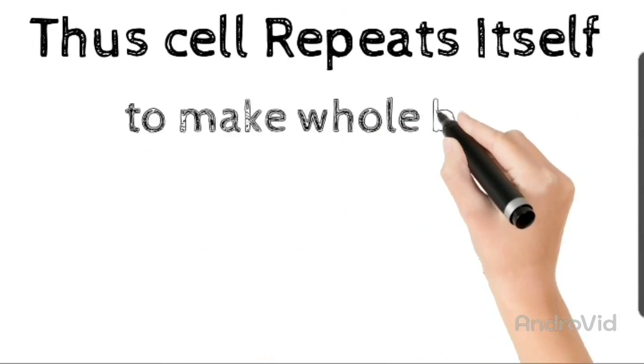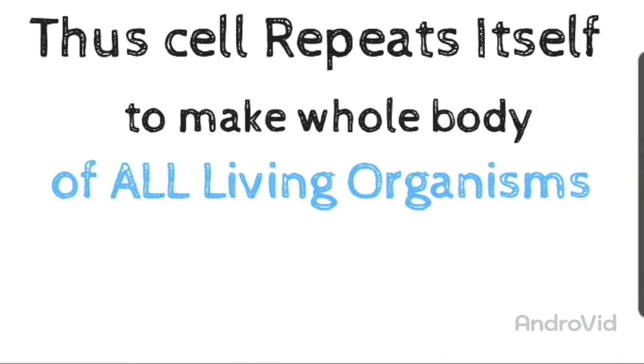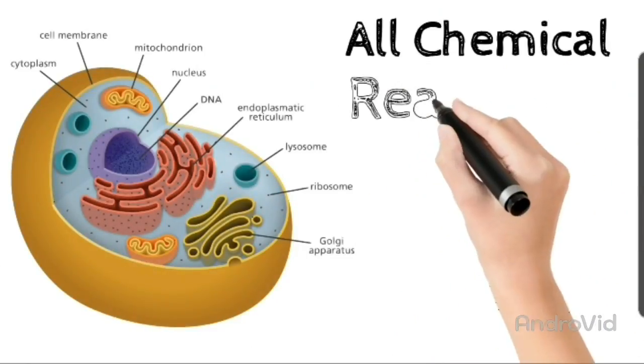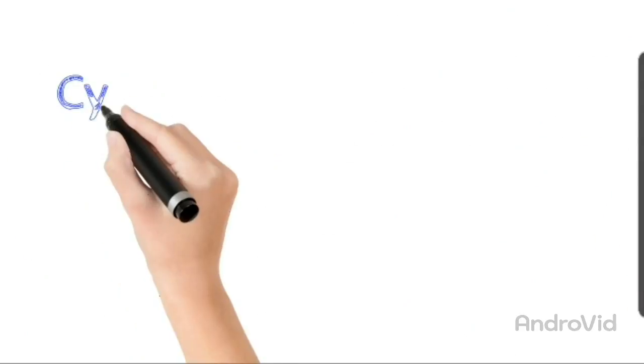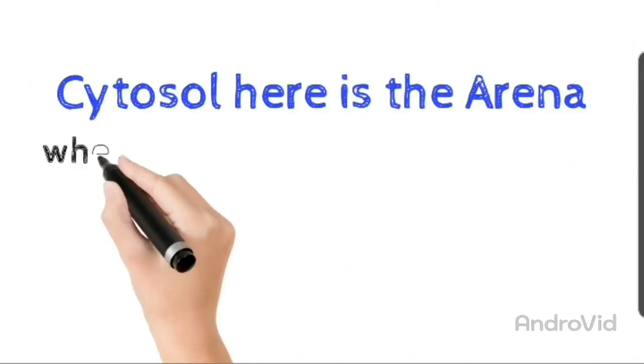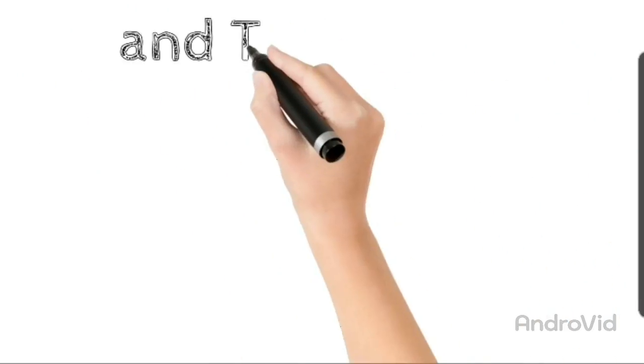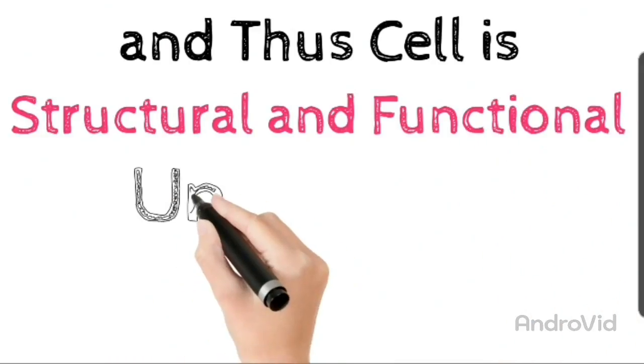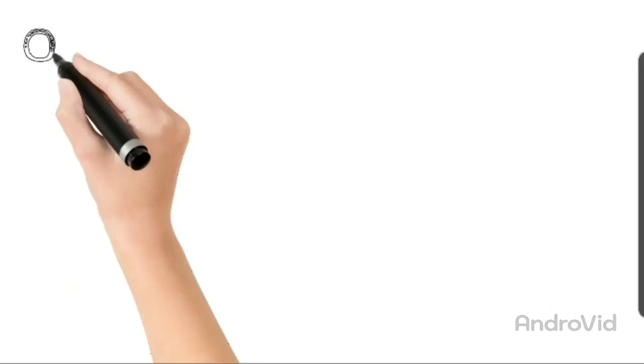So cell repeat itself to make the whole body of a living organism और यह बात हर living organism के लिए सत्य है, बिना cell के कोई भी survive नहीं कर सकता. The cell is also the metabolic arena यानि की हमारी body में जितने भी chemical reactions होते हैं, जितने भी metabolic reactions होते हैं वो सारे हमारे cell के matrix यानि cytosol के अंदर होते हैं जो कि हमारे cell को living state में रखने में काम करता है. So overall जो definition बनी cell की वो यह है कि यह आपका structural और functional unit होता है जिसमें सारे structural और functional aspects clarify हो जाते हैं.